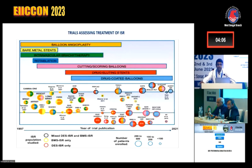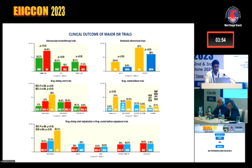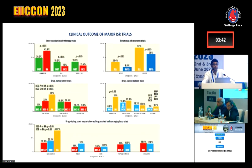Different studies involving balloon angioplasty, bare metal stents, intravascular brachytherapy, rotablation, cutting/scoring balloon, drug-eluting stents, and drug-eluting balloons have been performed. Key findings: angioplasty with either drug-eluting stent or drug-coated balloon gives better results than plain balloon. Using a scoring balloon prior to drug-coated balloon gives even better results. Comparing DCB to DES, DCB gives comparable results and is by no means inferior to DES in the treatment of in-stent restenosis.